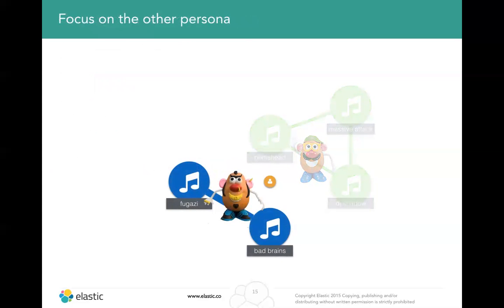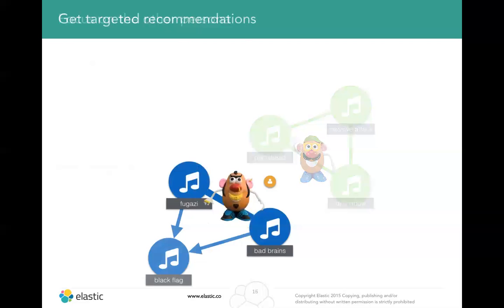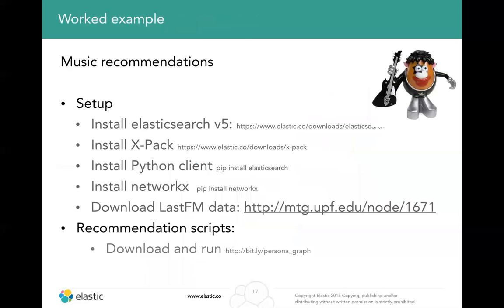That's one example of a persona. We then repeat the same task for different personas or clusters in the graph. Here's the Washington DC band fan persona, and we can see that persona would actually get a different suggestion. You can play around with that concept yourself. The prerequisites are: download Elasticsearch version 5, install X-Pack, install the Python client to run the scripts and the NetworkX library, plus the sample data. The scripts are available at bit.ly/persona_graph.